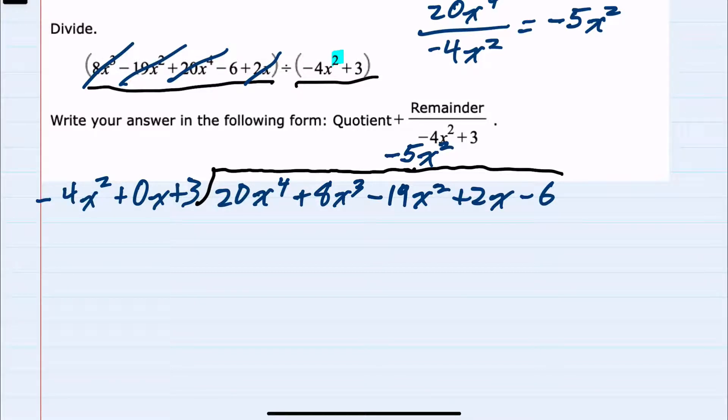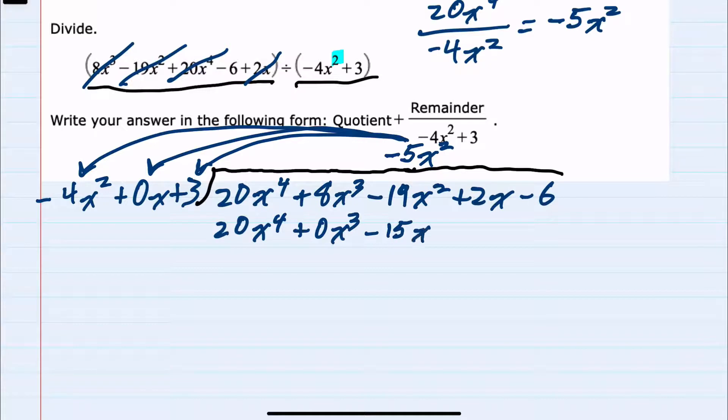And then just as in long division, I would multiply negative 5x² times a negative 4x² is a positive 20x to the 4th. Negative 5x² times a 0x would be a 0x to the 3rd. Negative 5x² times 3 is negative 15x².